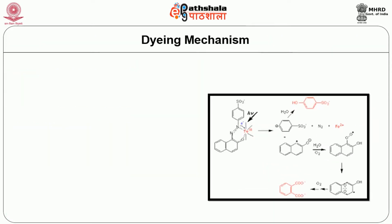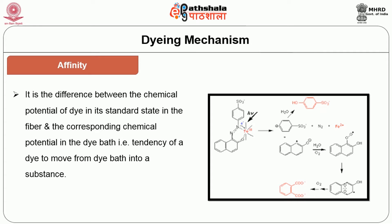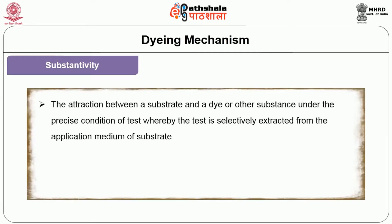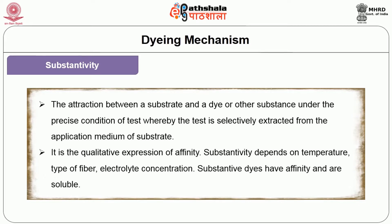Dye mechanisms. Dyeing of textile material is most importantly based on affinity and substantivity. Affinity is the difference between the chemical potential of a dye in its standard state in the fiber and the corresponding chemical potential in the dye bath — that is, the tendency of dye to move from the dye bath into the substrate. It is expressed in joules and is a quantitative expression of substantivity. Substantivity is the attraction between a substrate and a dye under precise conditions of test, whereby the dye is selectively extracted from the application medium onto the substrate — it is the qualitative expression of affinity. Substantivity depends on temperature, type of dye and type of fiber, and electrolyte concentrations.